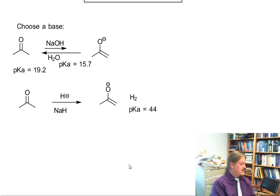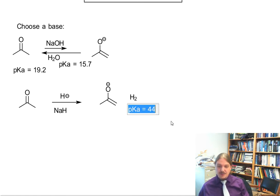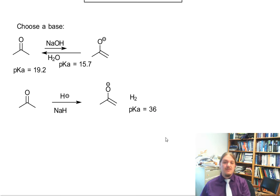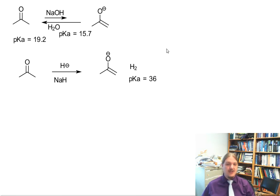I'm looking in the front cover of my trusty textbook, which is where everybody should know where their pKa table is for reference. I am wrong. Hydrogen is 36. 44 is one of the hydrocarbons. Still much, much less acidic.